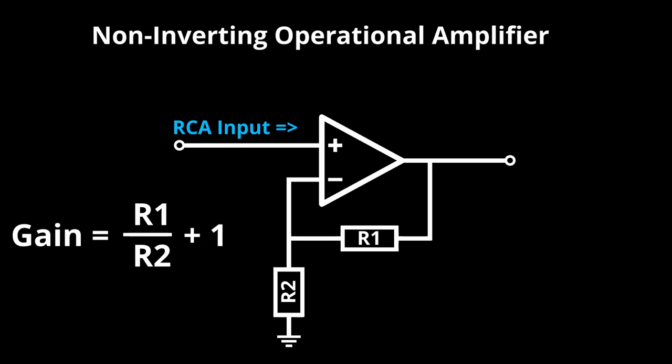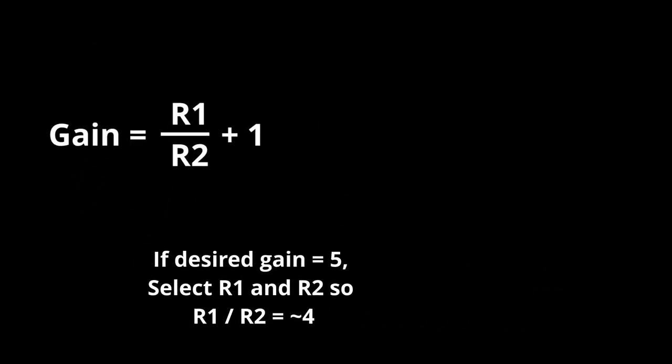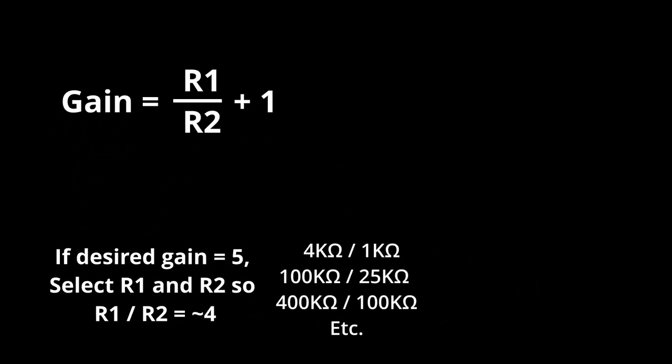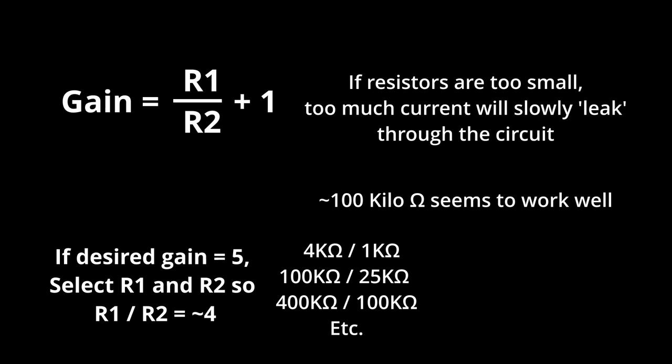So, if we want to multiply the signal by a factor of 5, we just need to select R1 and R2 values where R1 divided by R2 is around 4. We don't want to choose resistor values that are too small, because the smaller these values are, the more current will actually pass through them. Values around 100 kiloohms seem to work just fine.